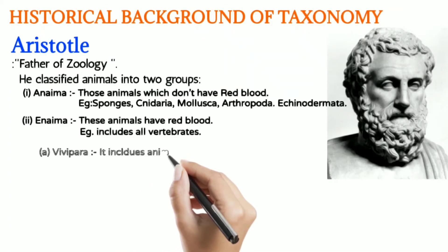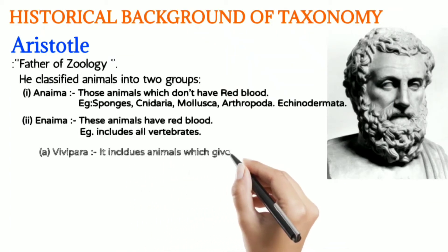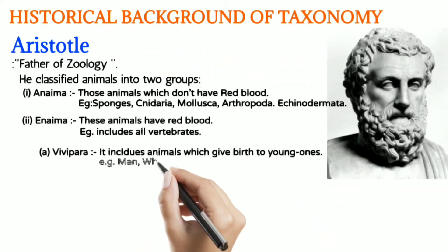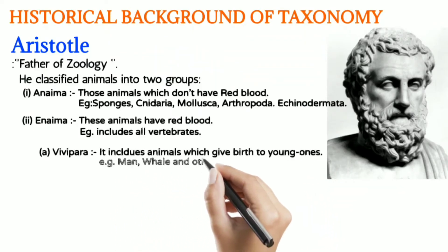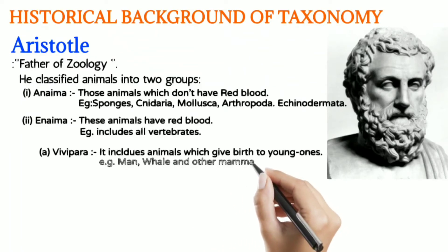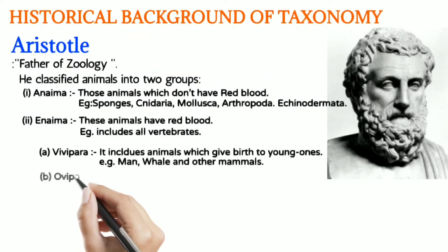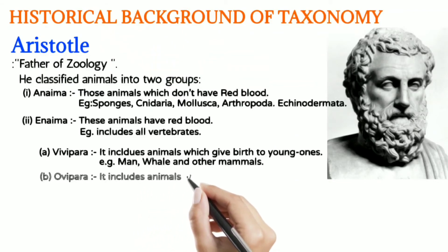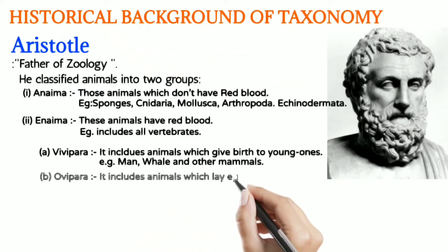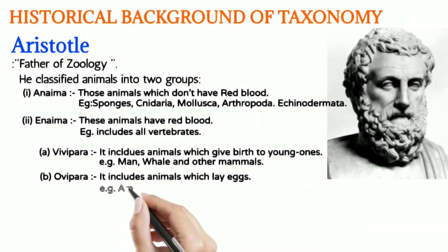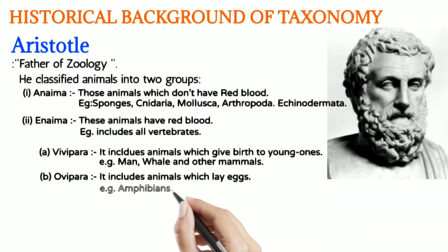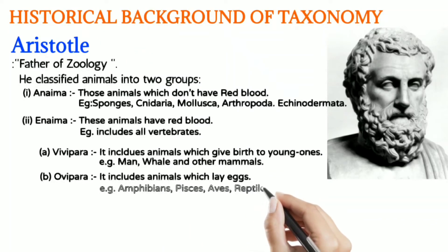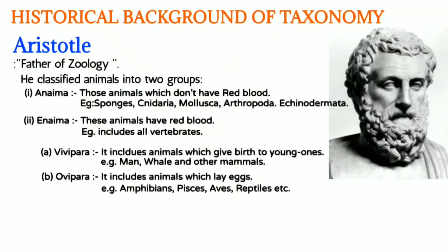Enaima was further divided into two parts. Vivipara included animals which give birth to offspring, like mammals — we are humans, we give birth to young ones. The second group among Enaima was Ovipara, which includes animals that lay eggs — examples are amphibians, Pisces, Aves (birds), and reptiles.